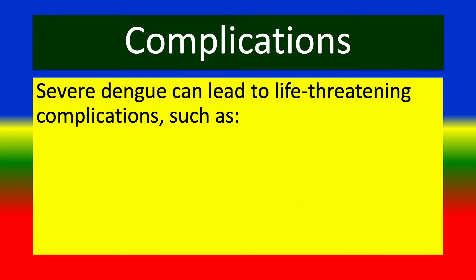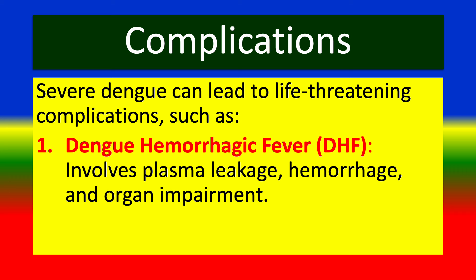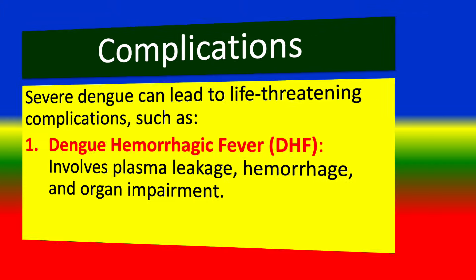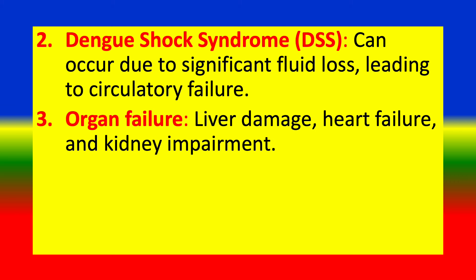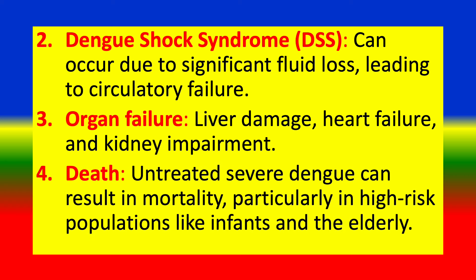Complications. Severe dengue can lead to life-threatening complications such as: dengue hemorrhagic fever, involving plasma leakage, hemorrhage, and organ impairment; dengue shock syndrome, which can occur due to significant fluid loss leading to circulatory failure; organ failure including liver damage, heart failure, and kidney impairment; and death, as untreated severe dengue can result in mortality, particularly in high-risk populations like infants and the elderly.